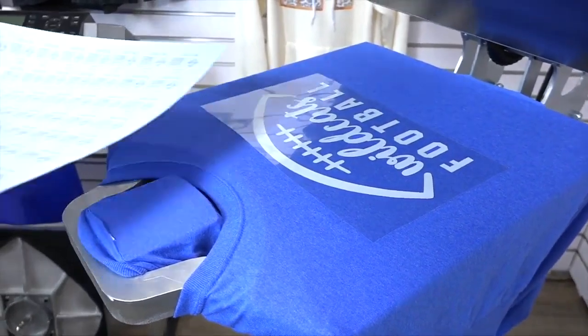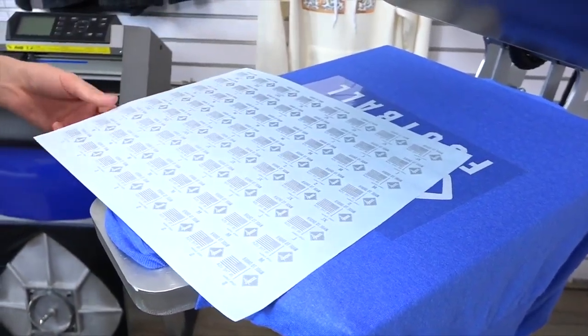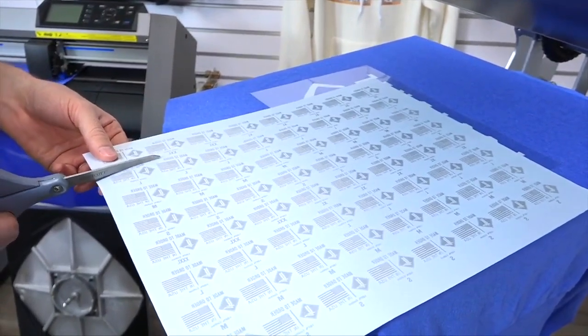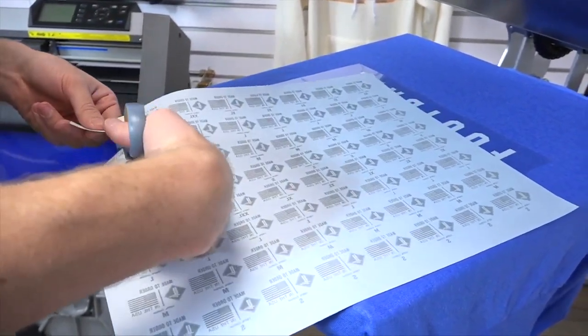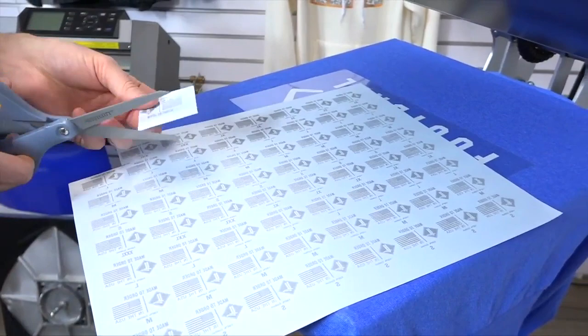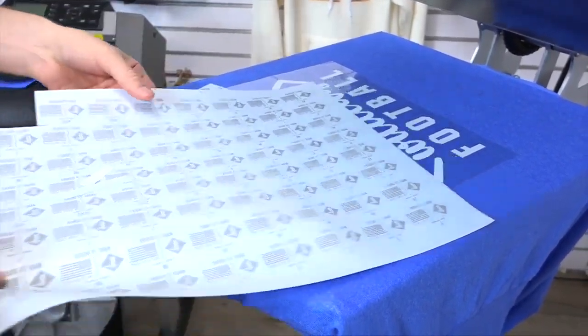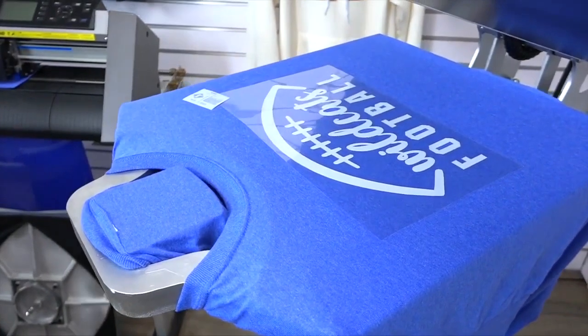And then I'm going to grab my gang sheet of tagless transfers, look for my triple XL size, trim that from my sheet. And also for alignment, I'm just going to trim the edge real quick and I'll be able to position that onto the garment. We can see very easy to grab in place.